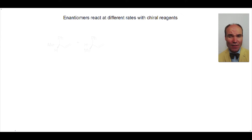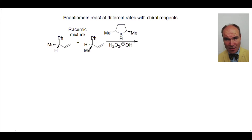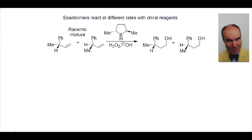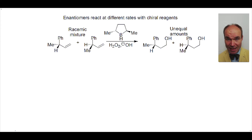Here we have a racemic mixture of enantiomers, so there are equal amounts of each enantiomer. They have a key alkene functional group. The alkene undergoes hydroboration with a borohydride that is a single enantiomer. The alkyl borane with hydrogen peroxide is converted into an alcohol — note this is a primary alcohol. The reaction hasn't created a new stereogenic center, and despite this, there is now an unequal amount of the two enantiomers. The overall product is non-racemic.